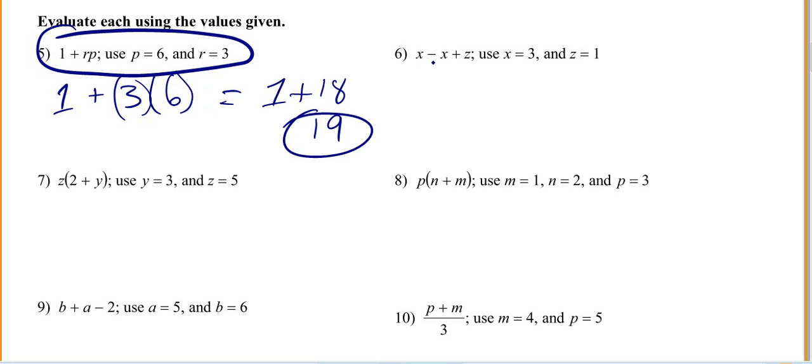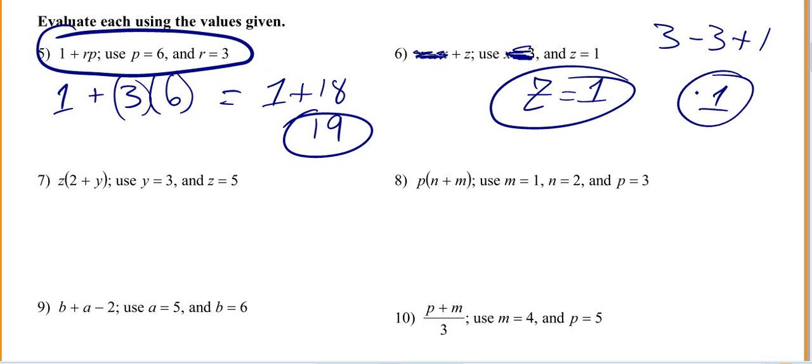Right here you've got X minus X, so we don't even need to worry about the X values because any number minus itself is 0. So we know Z is 1. If you wanted to plug in the numbers to see it for yourself, 3 minus 3 is 0, 0 plus 1 is 1.